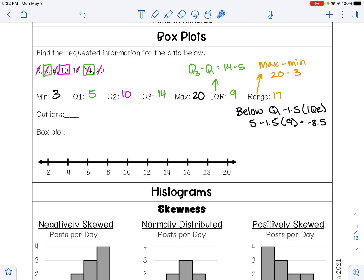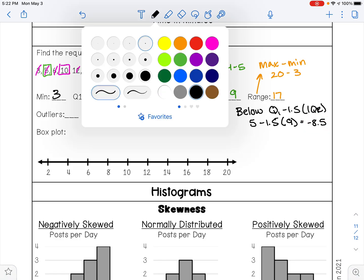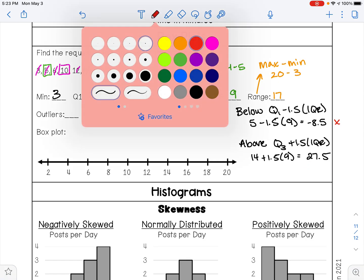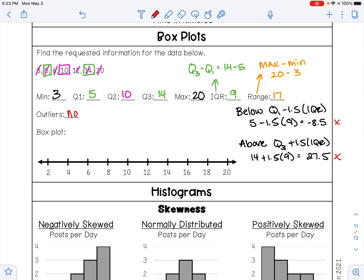None of these data values are below negative 8.5, so I do not have an outlier that is below. Let's check to see if we have an outlier that is above. You will have an outlier if you have a data value that is above Q3 plus 1.5 times the IQR. So in this example that's going to be fourteen plus 1.5 times nine, and when I do that in my calculator I get 27.5. So we're going to look at our data values, none of these data values are above 27.5, so we do not have an outlier that is above, so we do not have any outliers.